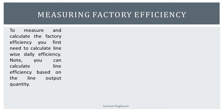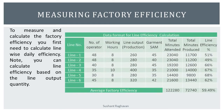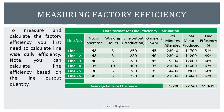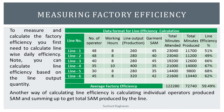To measure and calculate factory efficiency, you first need to calculate line-wise daily efficiency. You can calculate line efficiency based on the line output quantity. The data format for line efficiency calculation includes: line number, number of operators, working hours, line output production, garment SAM, total minutes attended, total minutes produced, and line efficiency. Another way of calculating line efficiency is calculating each individual operator's produced SAM and summing up to get total SAM produced by the line.